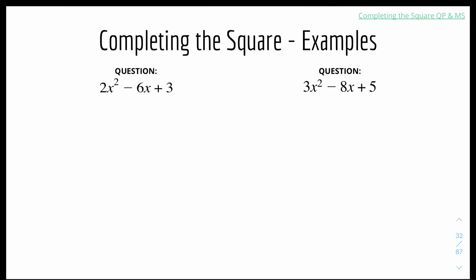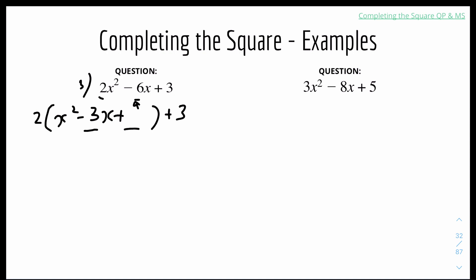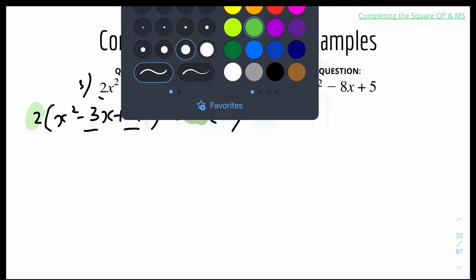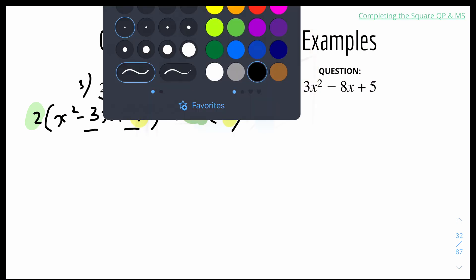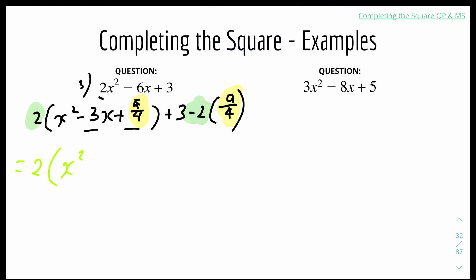Example 3: where a = 2. Factorise 2 out of the a and b terms: 2(x² − (3/2)x) + c — isolate the c coefficient. The new c term is (−3/2 ÷ 2)² = (−3/4)² = 9/4. So plus 9/4 inside, and on the outside minus 2 × 9/4. Simplifying, the final answer is 2(x − 3/4)² − 3/2.